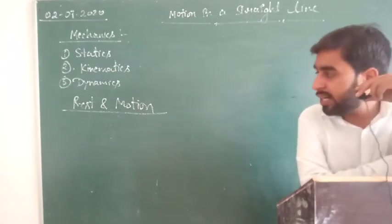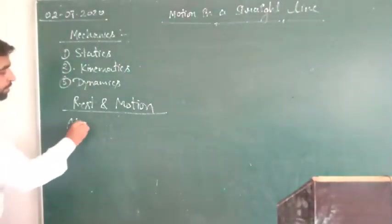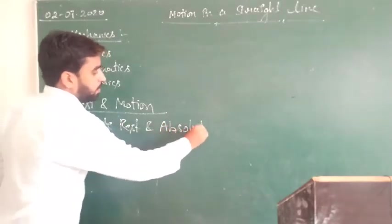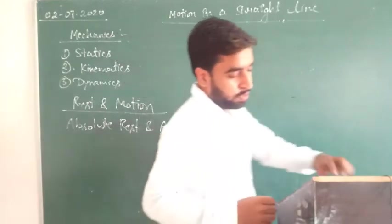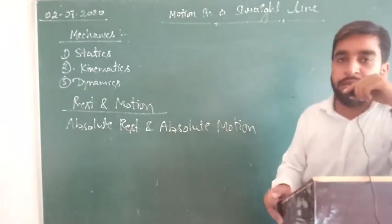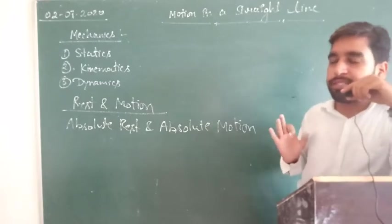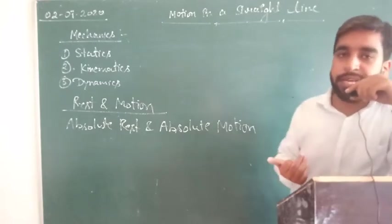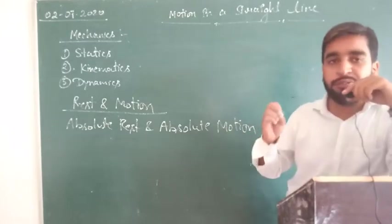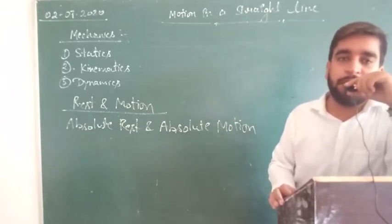Now we will discuss absolute rest and absolute motion. Absolute rest and absolute motion both are not possible. Absolute means with respect to every frame — with all axes, the object is at rest. This condition is never possible, so absolute rest is not defined.